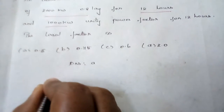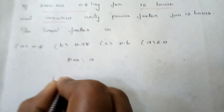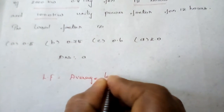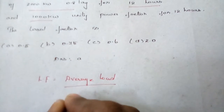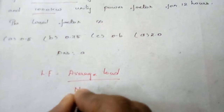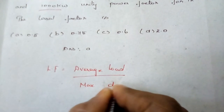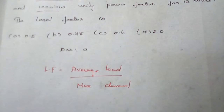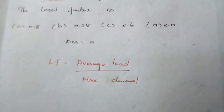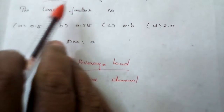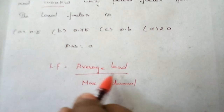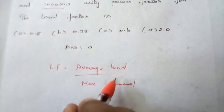The formula for load factor is: load factor equals average load divided by maximum demand. We have the maximum demand given, but we don't have the average load yet.